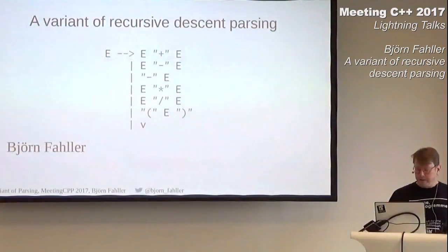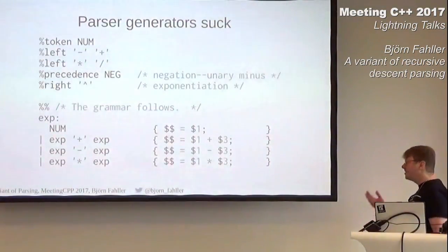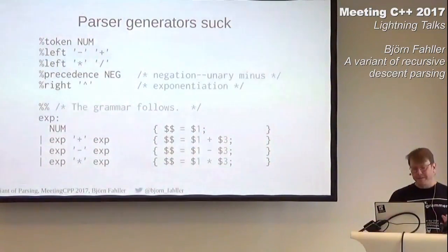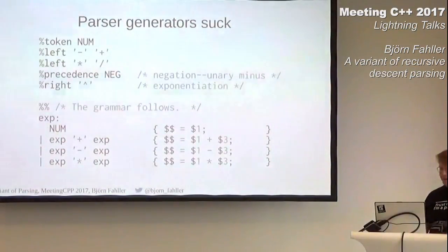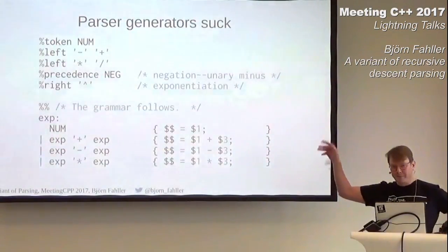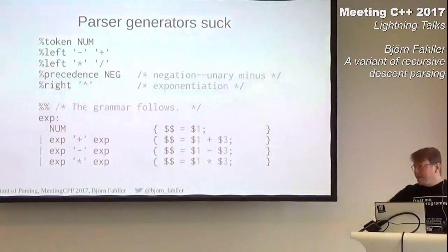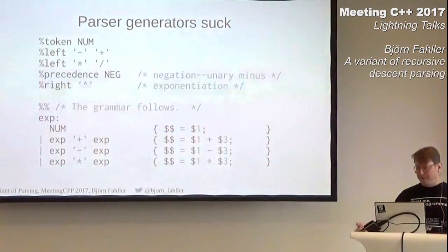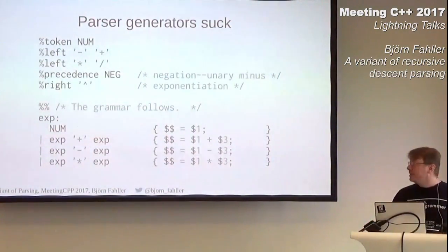This bothers me because parser generators suck. Actually, they don't suck — if you have a complex grammar, they are extremely helpful. But for a very simple grammar like this one — this is an example from GNU Bison's documentation — the distance between the code that you write and the code that is generated is just huge, it's difficult to debug, and it's enormously difficult to test. So you don't want to go there for a simple grammar like this one.